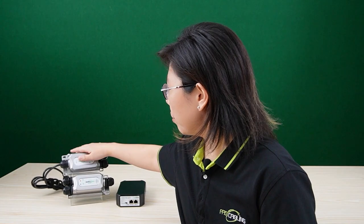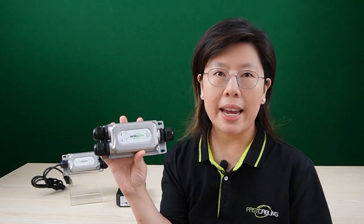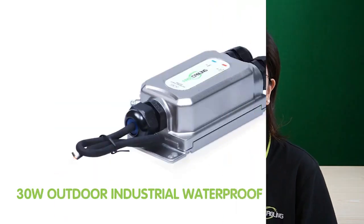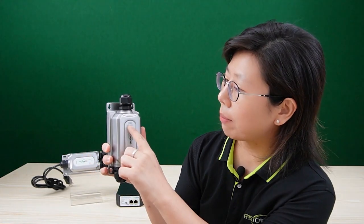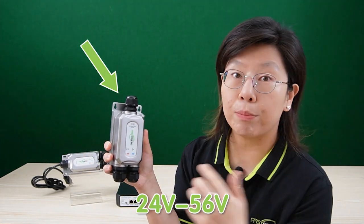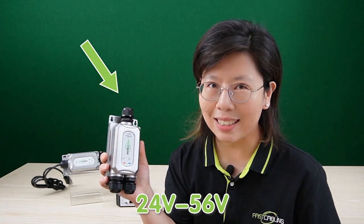Next, I'm going to introduce you to this one. This is the IEEE 802.3 AF and AT standard 30W PoE injector. It can inject 30W of power output and also accepts DC power input from 24 to 56V. It also supports 1000 Mbps Ethernet transfer rate.